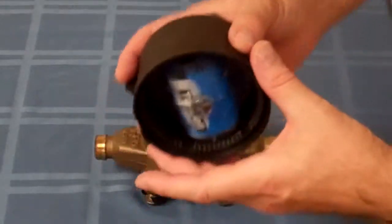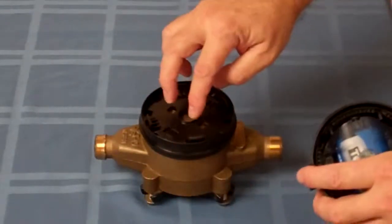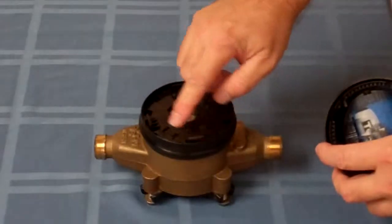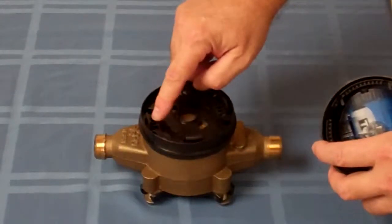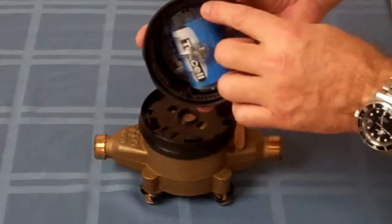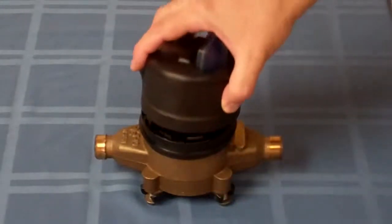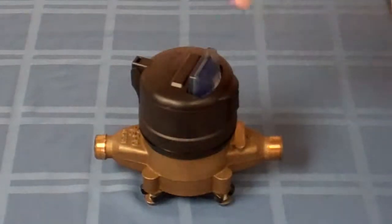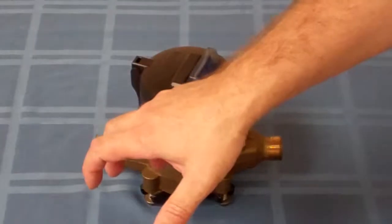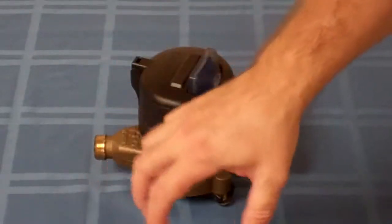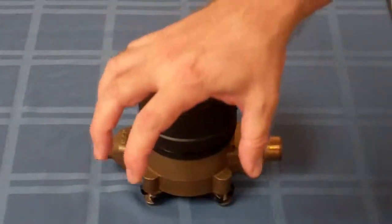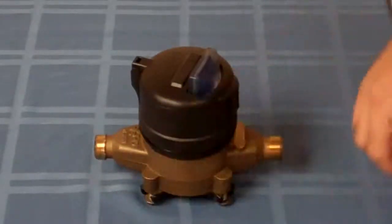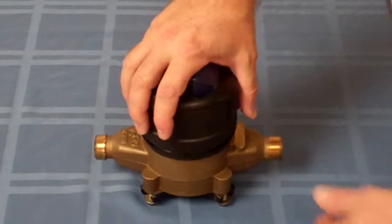What I want to make sure as I'm snapping this on the base is that this grommet doesn't get snagged on one of these four posts here. So I'm going to start the grommet in between two of the posts, and then with downward and clockwise pressure, I'm going to just snap it into place. It takes a little bit of practice, but you need to push down and turn slightly all at the same time.